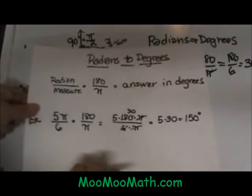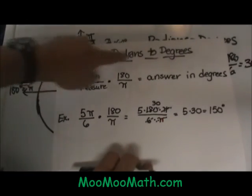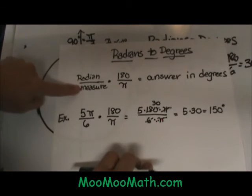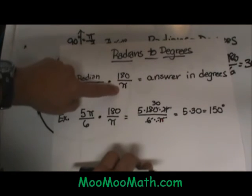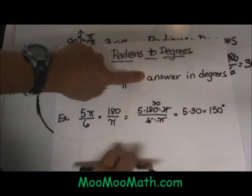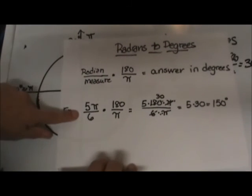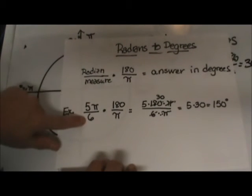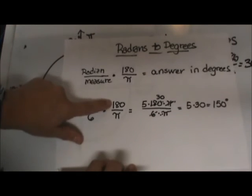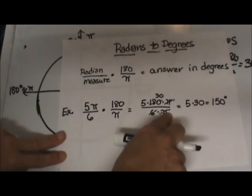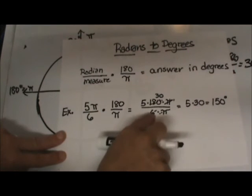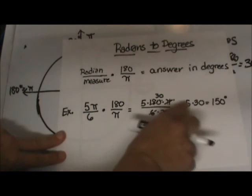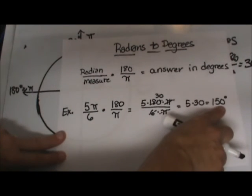So here is a quick summary page and one more example. Radians to degrees: You take the radian measure times 180 over π and that gives you your answer in degrees. Here is the second example: 5π over 6 times 180 over π. Notice the π's cancel. We reduce and we end up with 5 times 30 which is equal to 150 degrees.